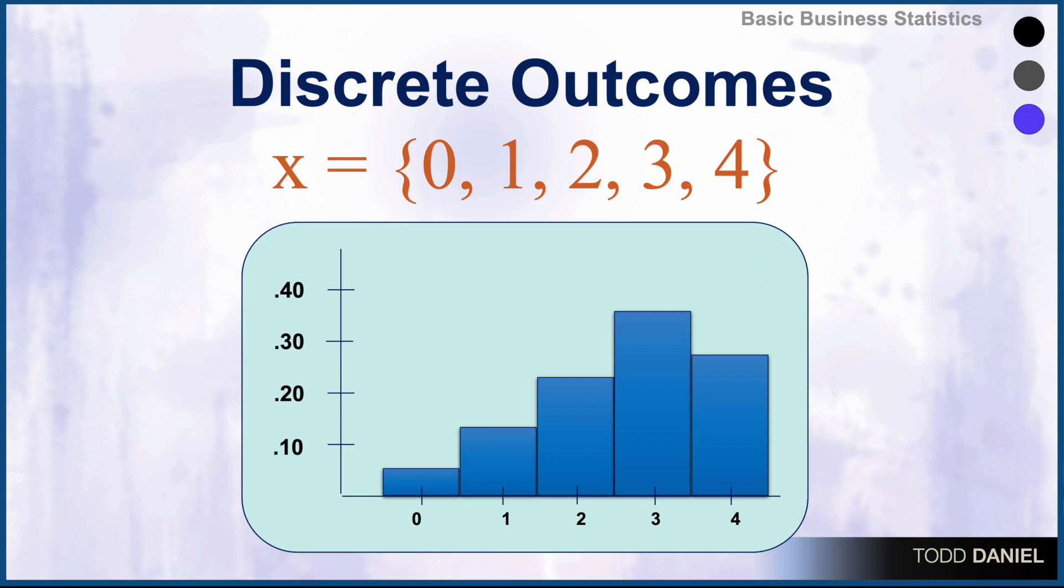If I asked you to examine this bar chart and tell me what is the most frequently occurring score, you would answer by counting. And your count would be three. Four shall thou not count. Neither count thou two, unless thou then proceedest to three. Five is right out.